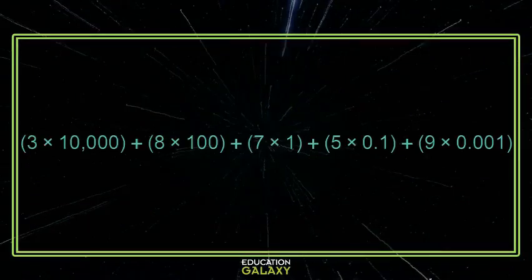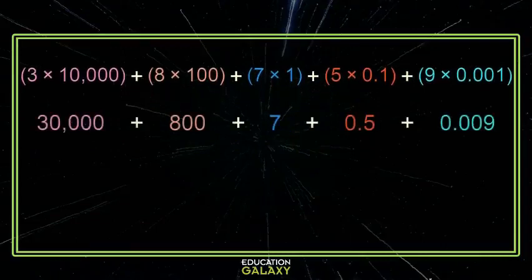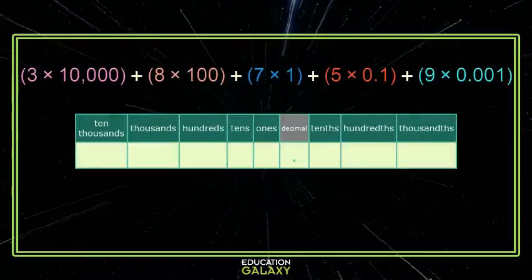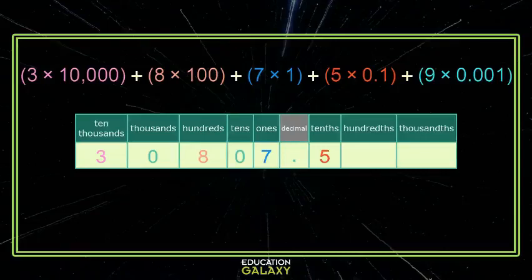Now what if our number is given to us already in its giant expanded form? Well, let's change its colors first. What we could do here is just multiply it out and add it all up, but that seems like a lot of math. So let's just use our place value chart because we're told what the number is. We have a three in the ten thousands. There's nothing in the thousands, so we'll just put a zero there. We have eight one-hundreds, so an eight in the hundreds place. No tens, so zero goes there. We have a seven for the ones. Don't forget your decimal goes between the ones and the tenths. We have a five in the tenths place. No hundredths, and finally a nine in the thousandths place. So there it is.